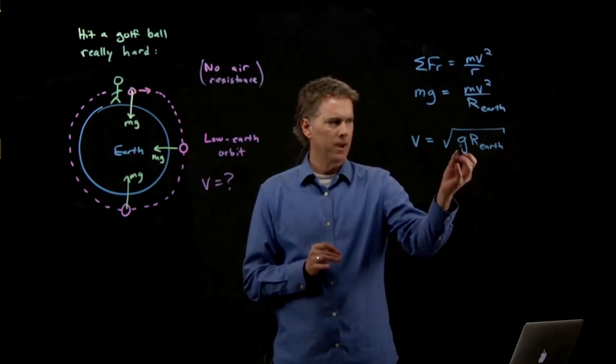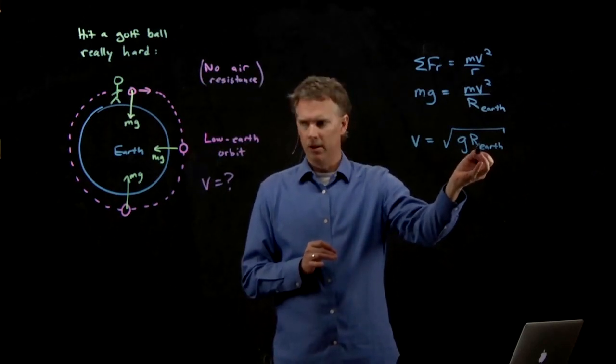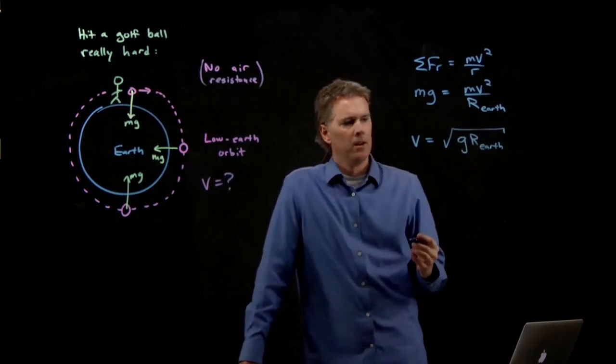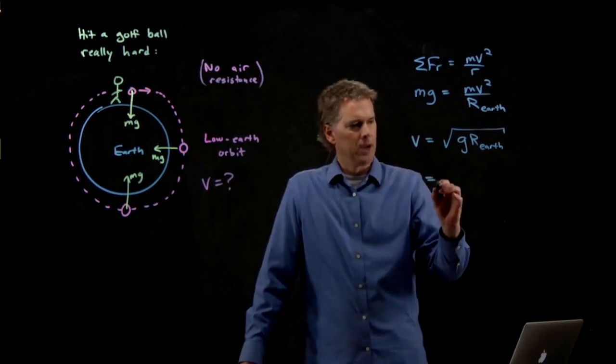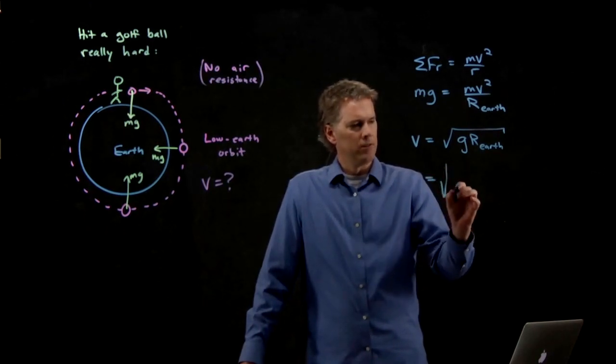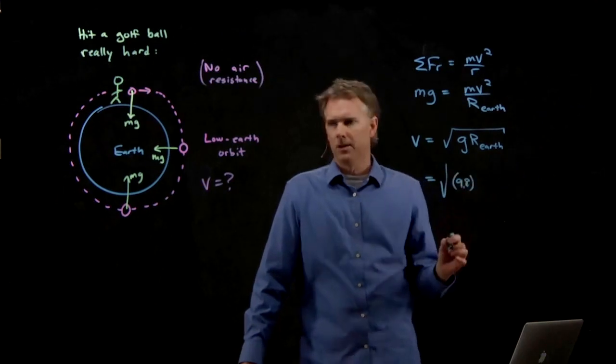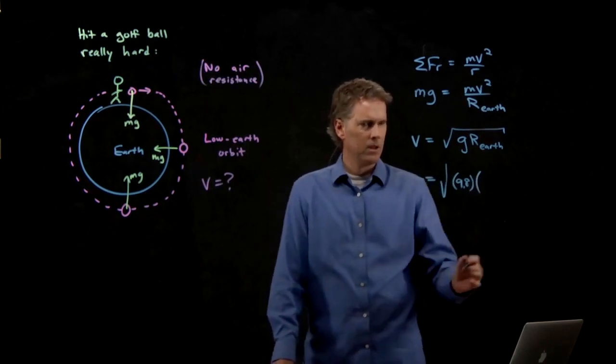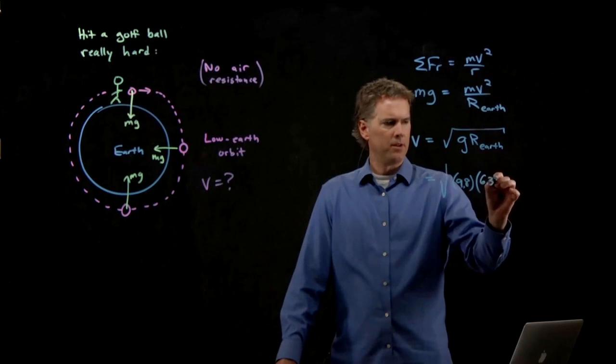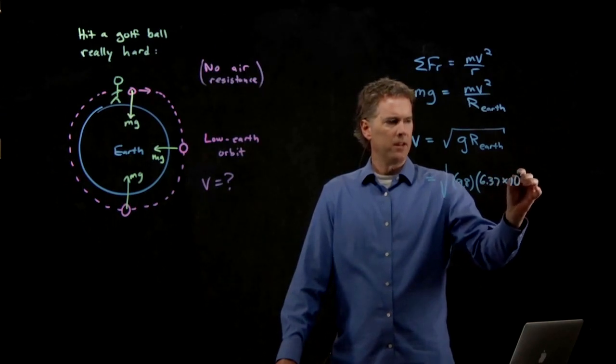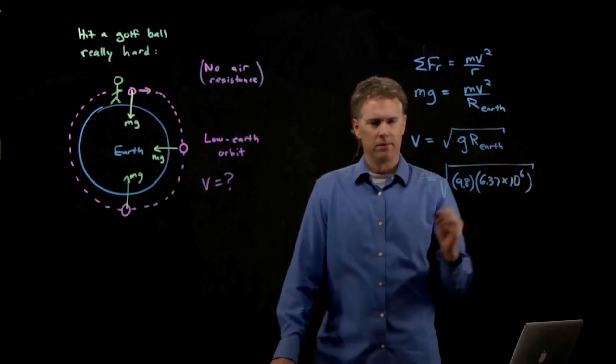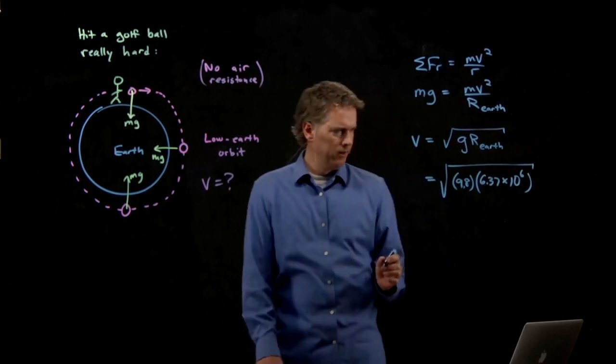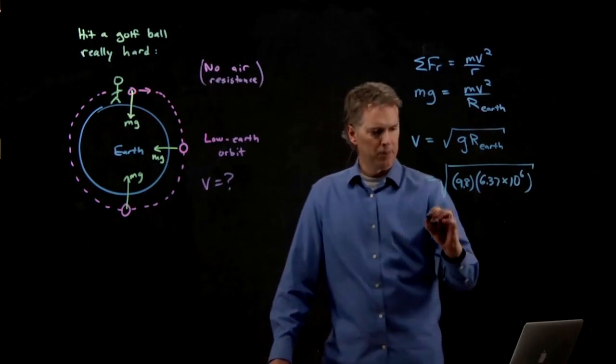Units look right. We've got meters per second squared. I'm going to multiply by meters. And so we're going to get meters squared per second squared. And when I take the square root, that works out. Let's see what this is for real. g is 9.8. What's the radius of the earth? We talked about this last time. Anybody remember? 6.37 times 10 to the 6 meters. That's the radius of the earth.